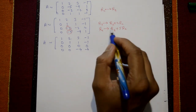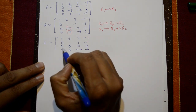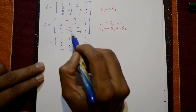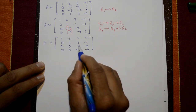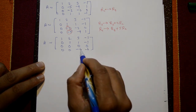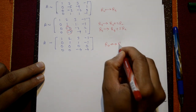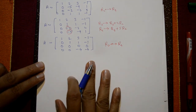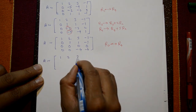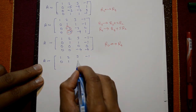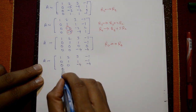R3 = R3 + 2R2 gives 0, 0, 0, 0 and R4 = R4 + 5R2 gives 0, 0, -4, -4. Since the leading number now requires a non-zero pivot, we interchange R3 and R4, giving the equivalent matrix: 1, 2, 3, -1; 0, 1, 1, -1; 0, 0, -4, -4; 0, 0, 0, 0.